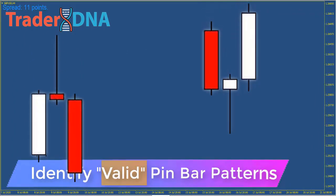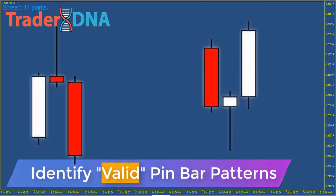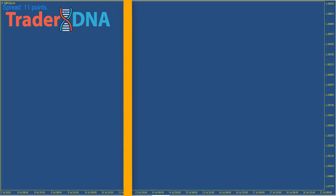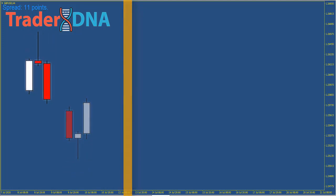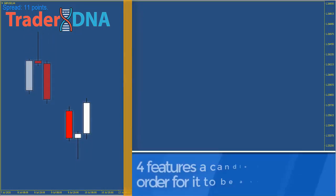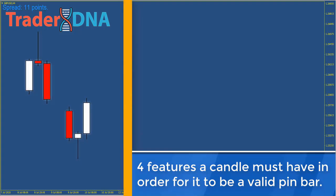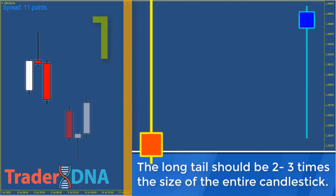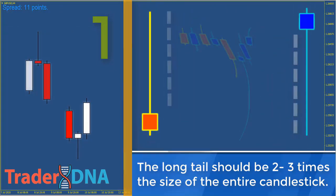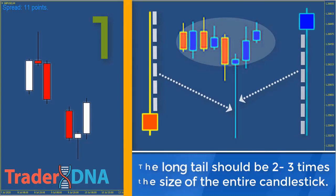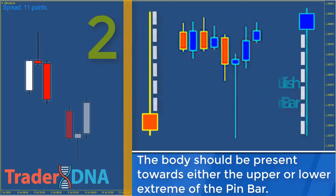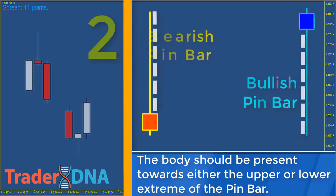Criteria to identify valid pin bar patterns. Pin bars, even though they are made up of the same features — long tail and small body — never look the same when they form on the chart. Figuring out whether a candlestick is a valid pin bar or not is a bit tricky. Luckily there are four features a candle must have in order for it to be a valid pin bar. First: a long tail that sticks out from the surrounding candlesticks — this should be at least two or three times the size of the entire candlestick. Second: the tail can either be below the body, in which case it's a bullish pin bar, or above the body, where it's a bearish pin bar.